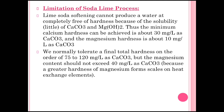Limitations of the soda lime process: the soda lime process cannot produce water completely free of hardness because of the solubility of calcium carbonate and magnesium hydroxide. The minimum calcium hardness achievable is above 30 mg/L as calcium carbonate and the magnesium hardness is about 10 mg/L as calcium carbonate. Normally the final total hardness in water is tolerated at 75 to 120 mg/L as calcium carbonate.